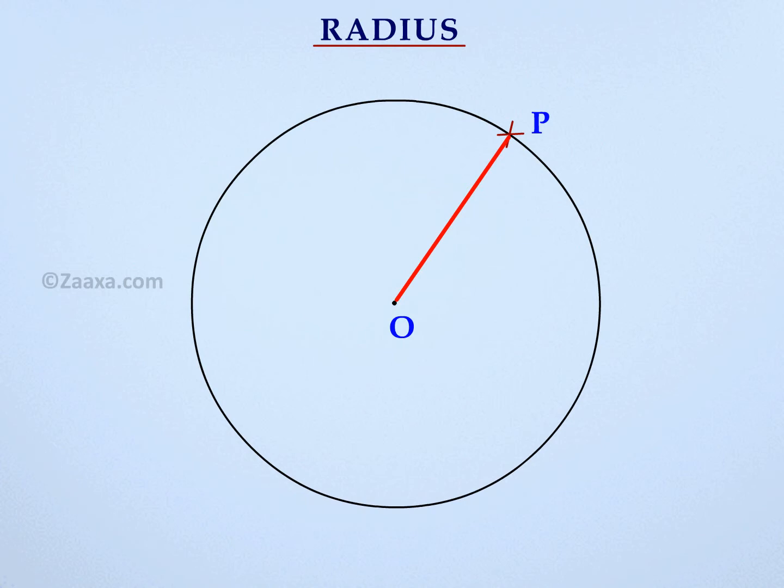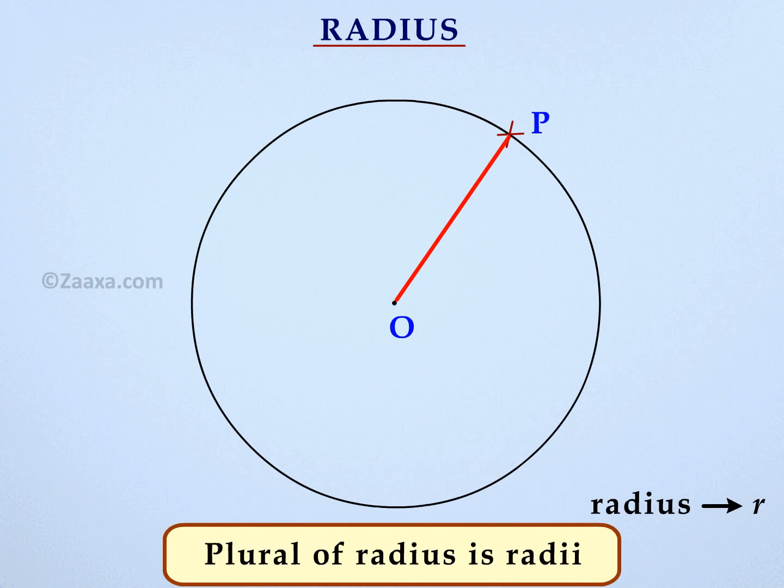We say that OP is a radius of the circle. Radius is usually denoted by R. Keep in mind that the plural of radius is radii.